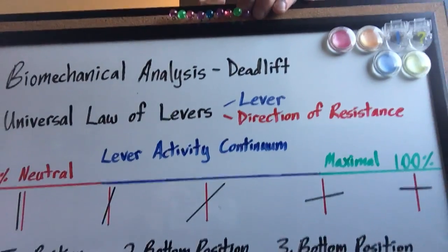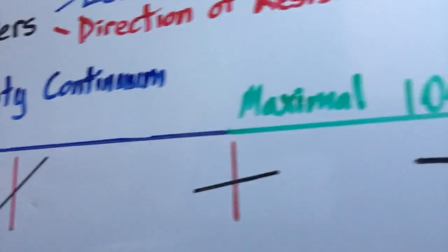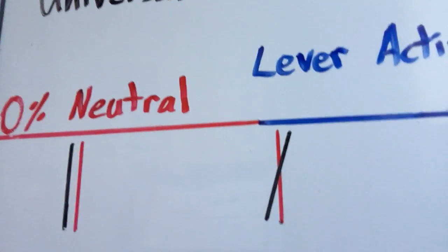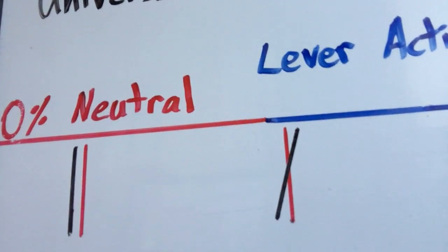So to help reinforce the point, let's take a look at the lever activity continuum. On one end of the spectrum, we have neutral. On the other end of the spectrum, we have maximal activity. Now when the lever is parallel to the direction of resistance, the lever is in a neutral or inactive position.